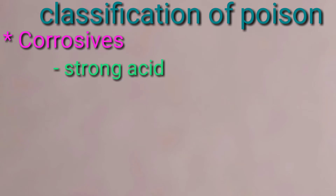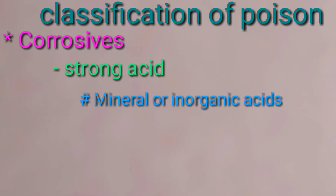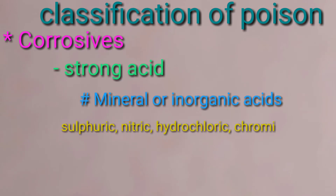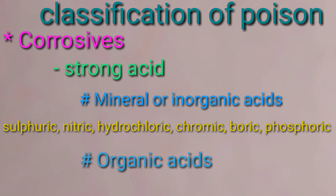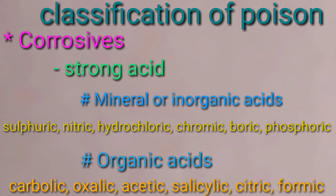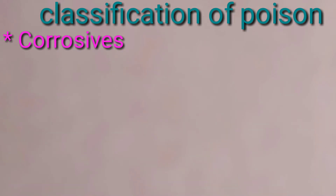Corrosive poisons — strong mineral (inorganic) acids: sulfuric acid, nitric acid, hydrochloric acid, chromic acid, bromic acid, and phosphoric acid. Then organic acids: carboxylic acid, oxalic acid, acetic acid, salicylic acid, citric acid, and formic acid.